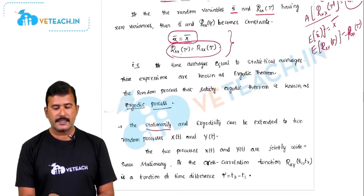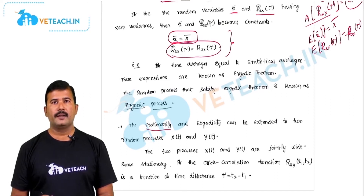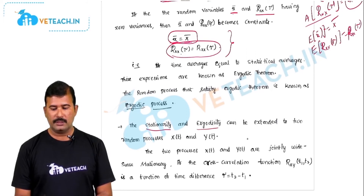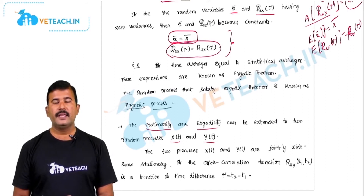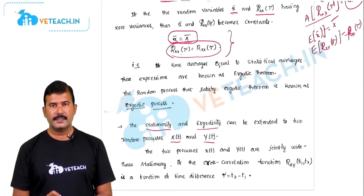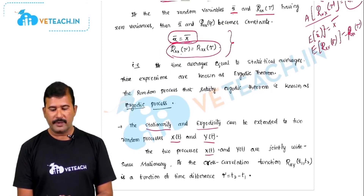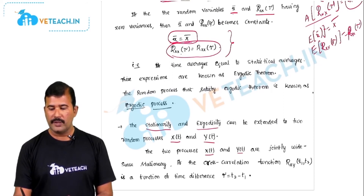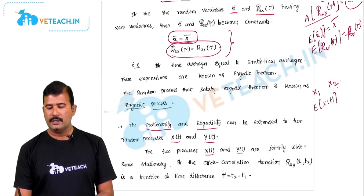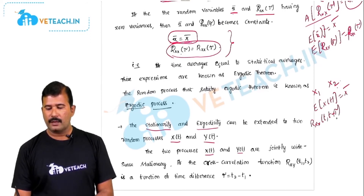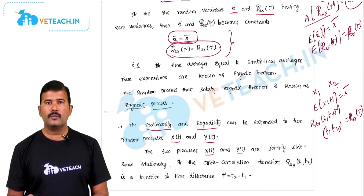In the same way that stationarity is extended to n random variables defined on a random process, ergodicity can also be extended to two or n random variable cases. For two processes x of t and y of t, they are said to be jointly wide-sense stationary. Wide-sense stationarity for one process requires that the expected value of the process is constant and the autocorrelation function R_xx of t1 comma t2 is a function of the time difference tau = t2 minus t1. Then x is called a wide-sense stationary random process.